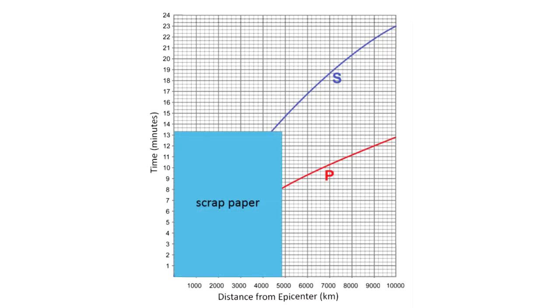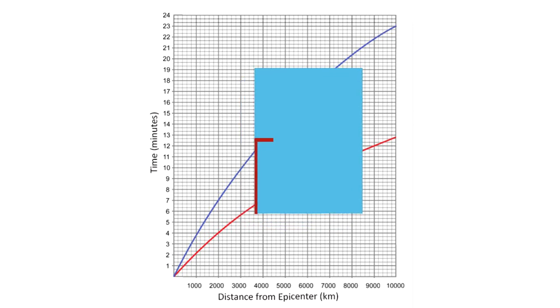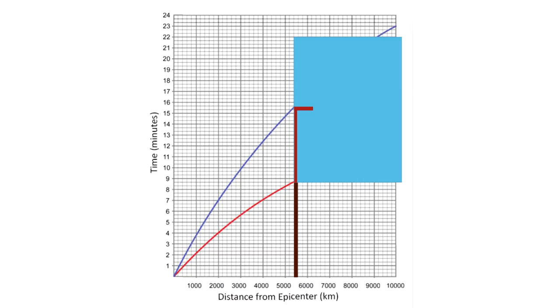Using scrap paper, we mark the 7 minutes lag time by positioning the scrap paper vertically along the y-axis on time in minutes. Then slide the paper such that the length corresponds to 7 minutes fits to the S-P curve. Then project down along the epicenter distance scale to get the distance in kilometers. Here we have 5,400 kilometers as the distance of the epicenter to the seismic station.